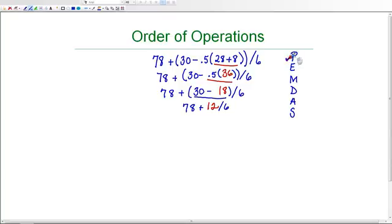So parentheses are now finished. As I look at my new expression here, I don't have any exponents. Now it's multiplication or division, whichever comes first. I don't have multiplication, but I do have division. So 12 divided by 6 is 2. And then as I bring down the rest, I have 78 plus 2, which is 80.